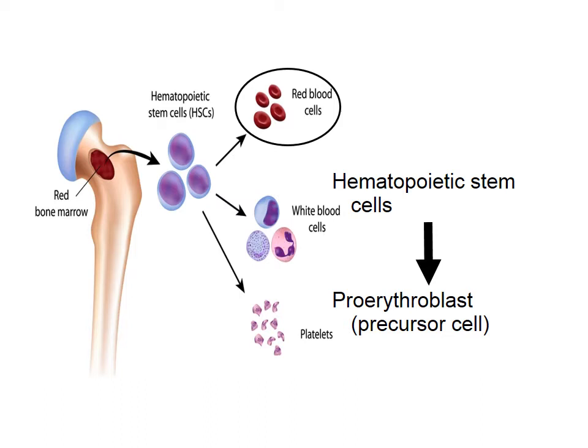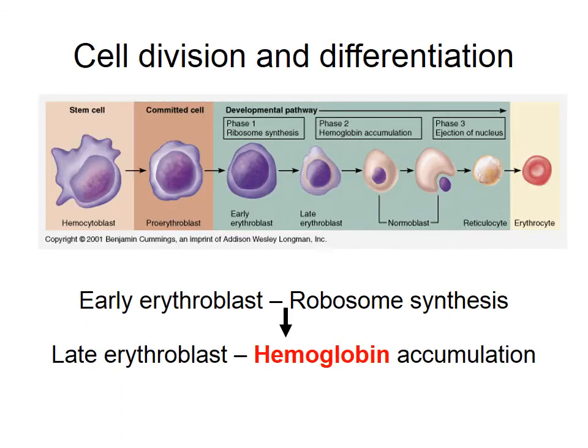From here, a number of cell divisions and differentiations occur. The proerythroblast develops into an early erythroblast, which is responsible for ribosome synthesis. These ribosomes then synthesise haemoglobin in the late erythroblast stage. As we know, haemoglobin is the major constituent of red blood cells and is the protein responsible for carrying the oxygen in the red blood cells. It also gives the blood its red colour.